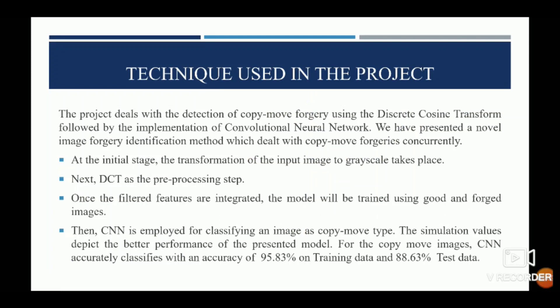The techniques used in our project deal with detecting copy-move forgery using DCT, followed by CNN. At the initial stage, we transform the input image to grayscale — to reduce certain parameters. Then DCT is applied. Once the filtered images are integrated, we train using good and forged images, and the simulation values depict better performance for copy-move images.